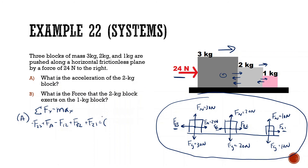We have 3 boxes, so total mass is M3 + M2 + M1. The internal equal-and-opposite force pairs cancel out with one another.